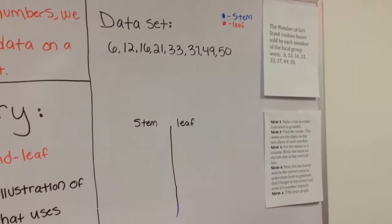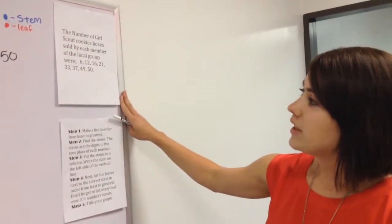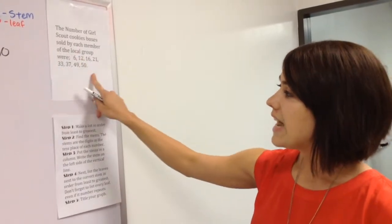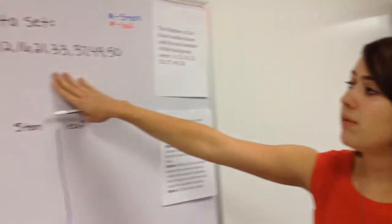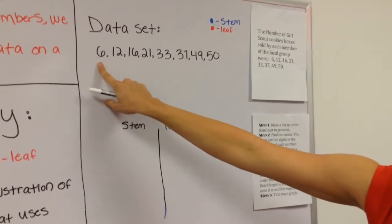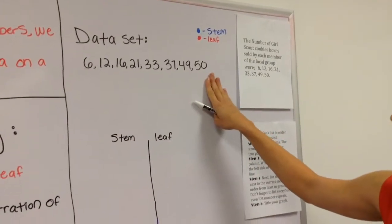So an example of what this problem would look like in your homework or in a textbook is right here. The number of Girl Scout cookie boxes sold by each member of the local group were, and then here's our data set. Our data set is right here. I already went ahead and wrote it down for us. So it's starting from least to greatest. So our smallest number is a six, and it goes all the way to 50.